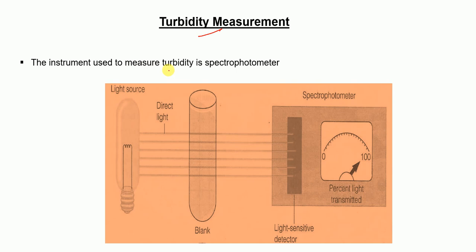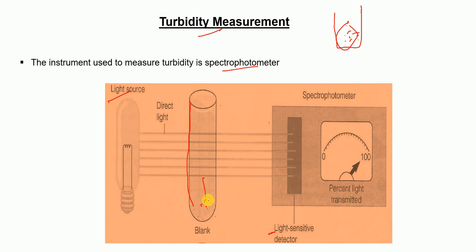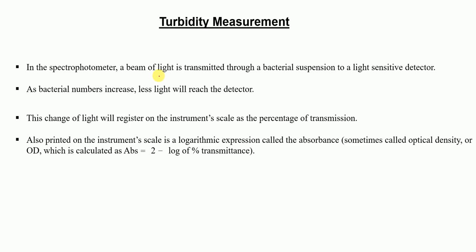In turbidity measurement, we take the bacterial sample in a cuvette and place it in the spectrophotometer. We have a light source, and we let the light pass through. If it is blank, all the light will be detected by the detector. But if it contains bacteria, not all light will reach the detector — only some light will reach it. As bacterial numbers increase, less light reaches the detector. If bacterial numbers are high, less light reaches the detector; if bacterial numbers are low, more light reaches the detector.